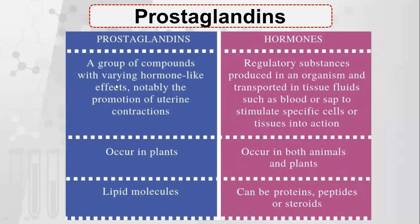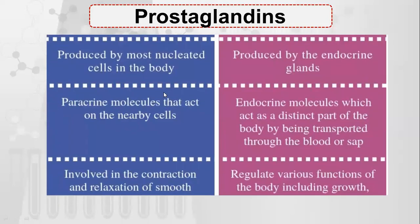What is the difference between prostaglandins and hormones? Prostaglandins are a group of compounds with varying hormone-like effects, notably the promotion of uterine contractions. Hormones are regulatory substances produced in an organism and transported via blood or sap to stimulate specific cells or tissues. Prostaglandins are present in plants, while hormones are present in both plants and animals. Prostaglandins are lipid molecules, while hormones can be proteins, peptides, and steroids. Prostaglandins are produced by most nucleated cells in the body, while hormones are produced by endocrine glands.